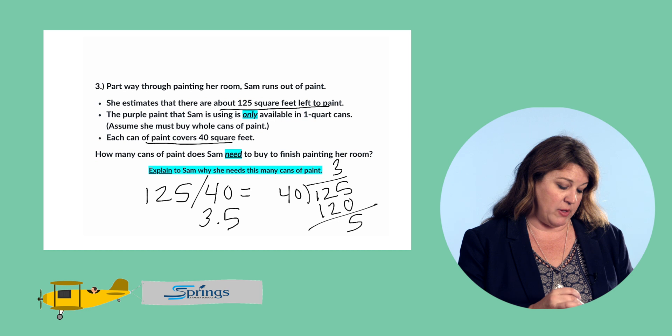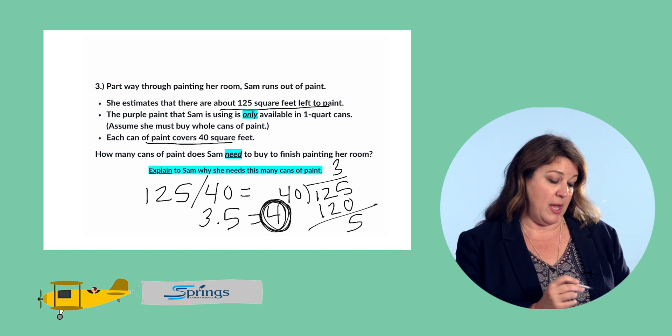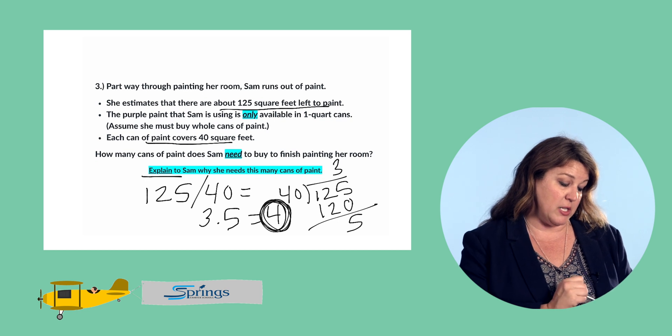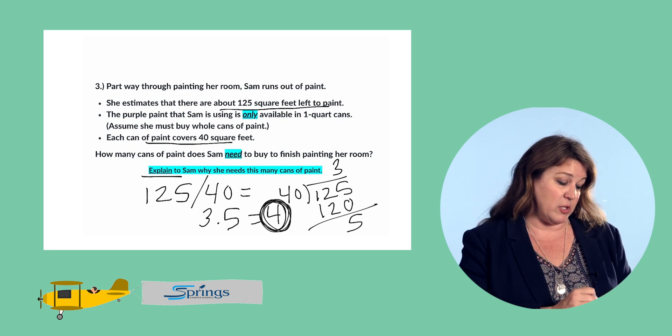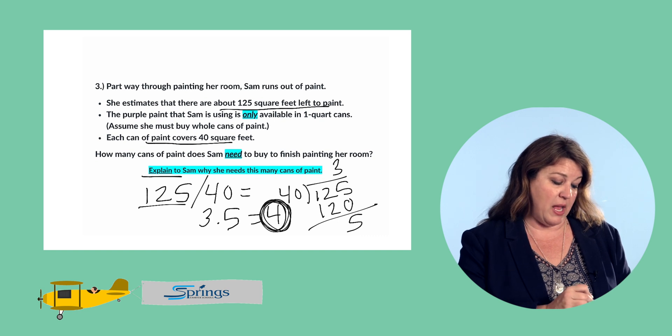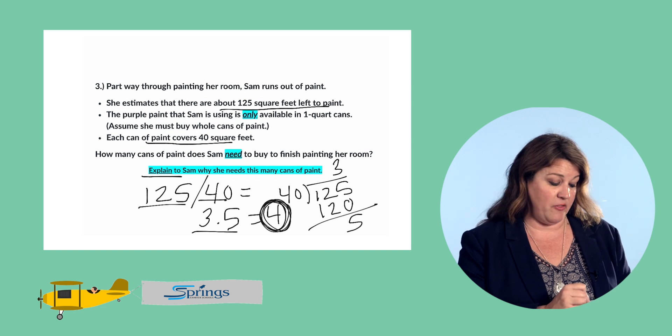So, she's going to actually have to buy four more cans of paint in order to finish the job. It's asking us to explain why she needs this many cans of paint, and it's because she has 125 square feet left to paint. Each can of paint covers 40 square feet. That means she needs 3.5 cans of paint.